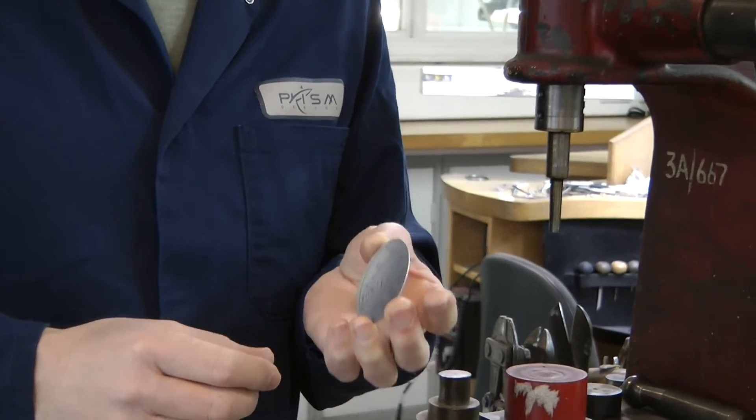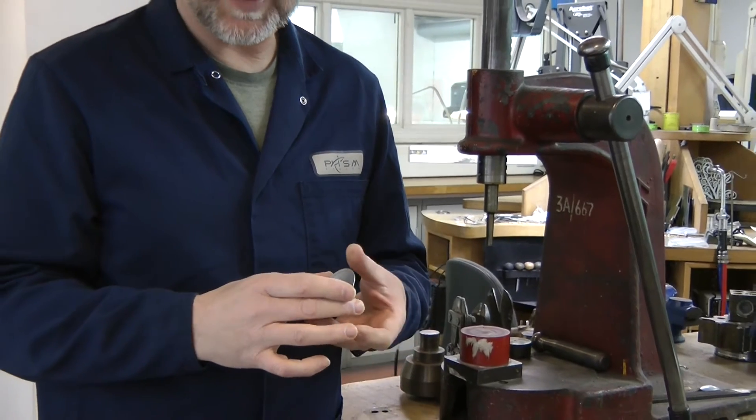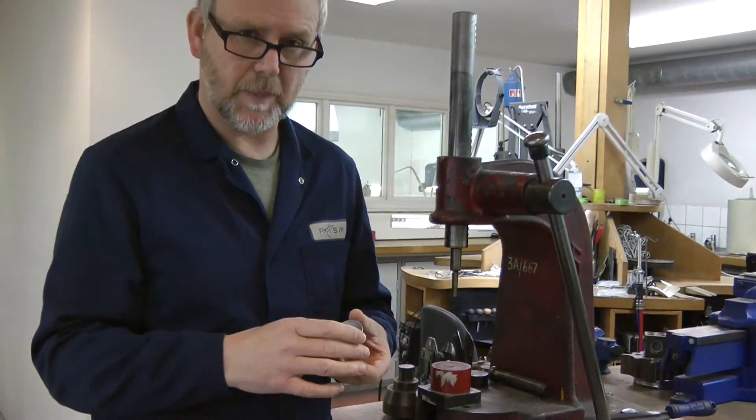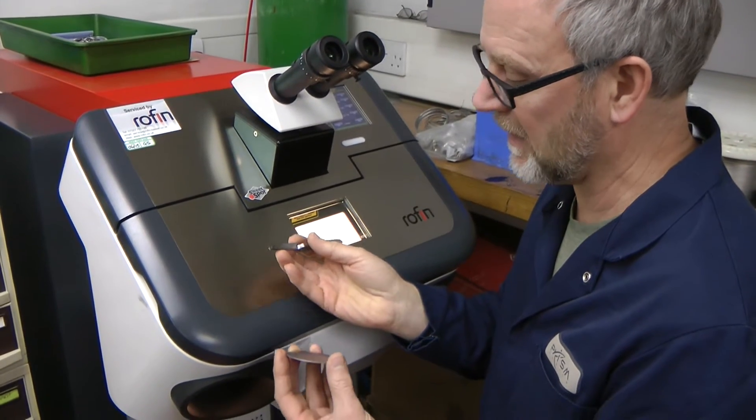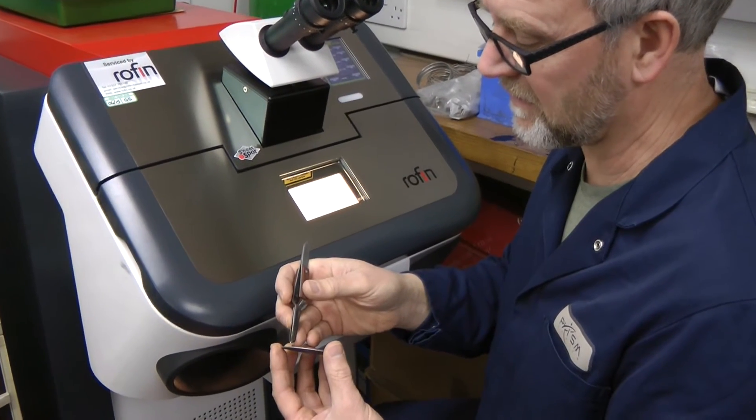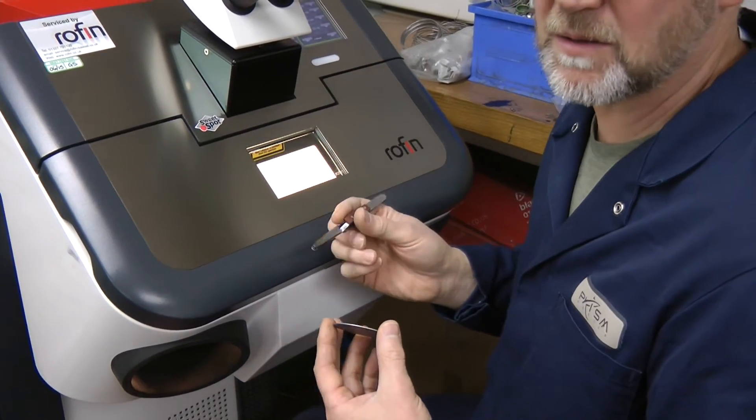The next stage is to add the fitting to the back so that it becomes a pendant and will fit on the chain. The stage involves placing a ring on the back of the pendant. In order to do that, we'll use a laser welding machine.